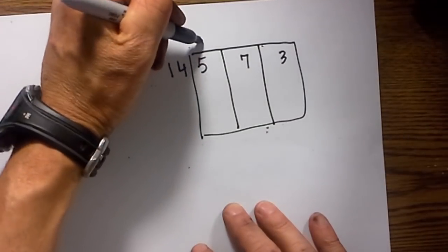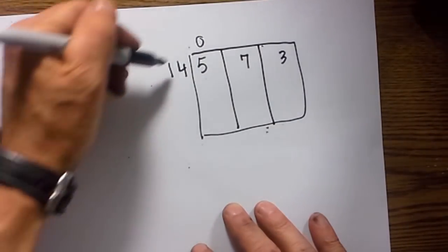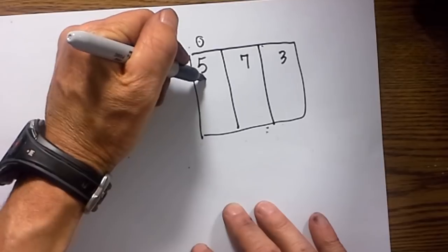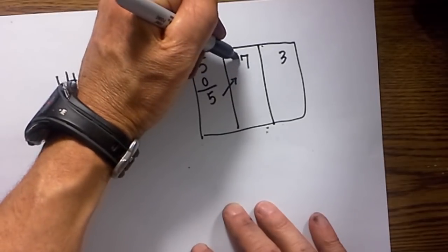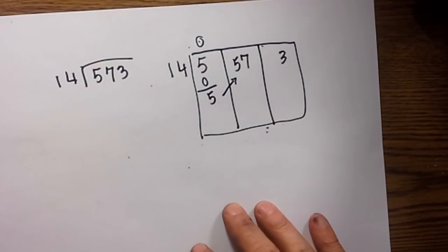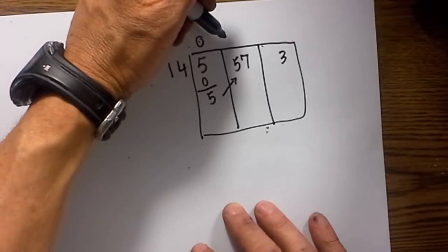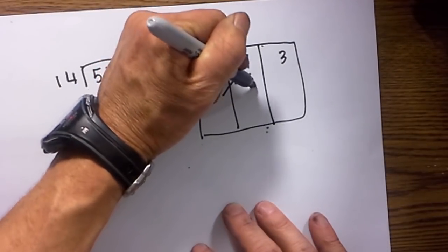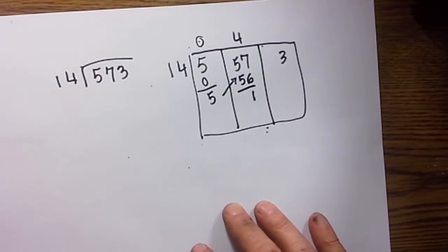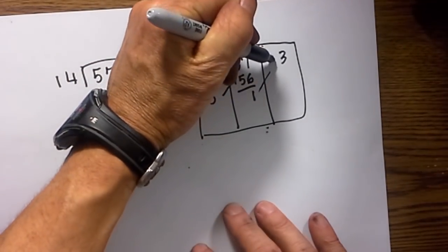14 goes into 5, which is larger than 5, so we put a zero. Zero times 14 is zero, so we have 5 remaining. We move this over to the tens and we have 57. 14 goes into 57, and 14 times 4 is 56 with 1 remaining. So we move the 1 to this column.